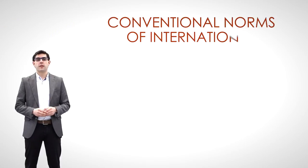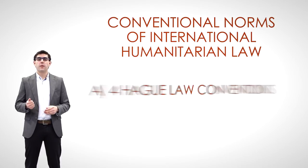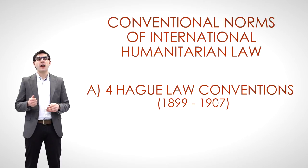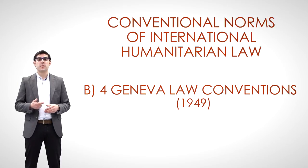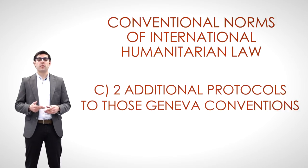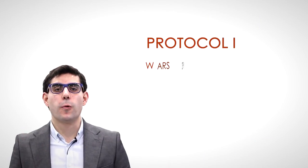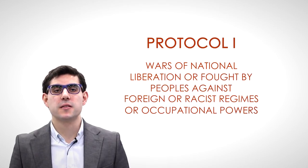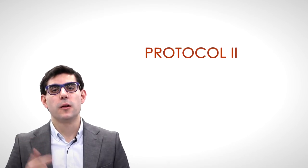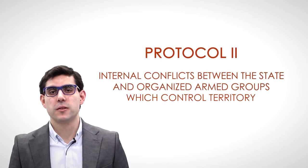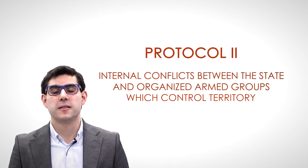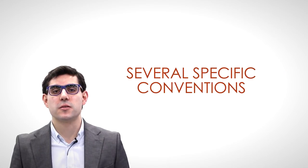General conventional norms of international humanitarian law can be divided into: (a) Four Hague Law Conventions, dated between 1899 and 1907; (b) Four Geneva Law Conventions, signed in 1949, referring to the wounded, the sick and the shipwrecked members of armed forces, prisoners of war, and civilians; (c) Two additional protocols to those Geneva Conventions, signed in 1977. Protocol 1 deals with wars of national liberation or fought by peoples against foreign or racist regimes. Protocol 2 refers to internal conflicts between the State and organized armed groups that, under a responsible command, control part of the territory so that they may conduct sustained and concerted military operations. There are also several specific conventions on humanitarian law.